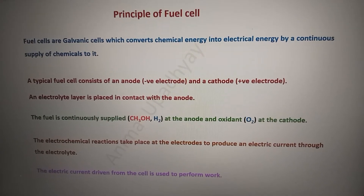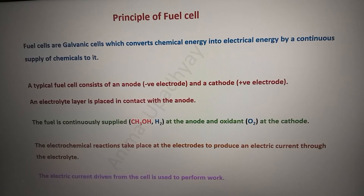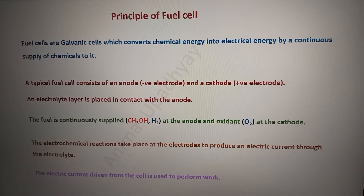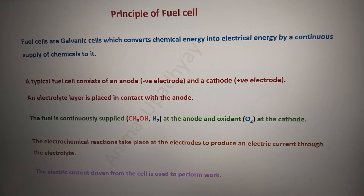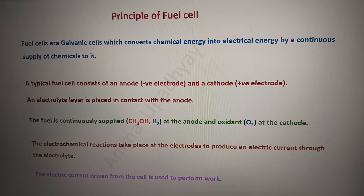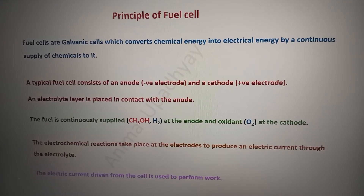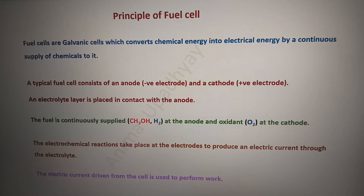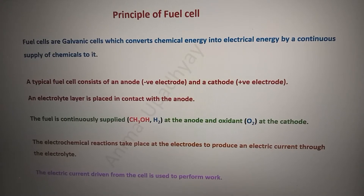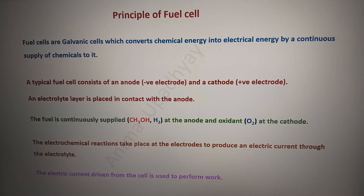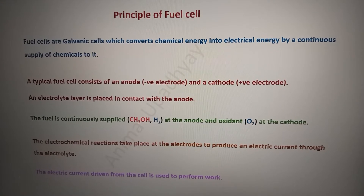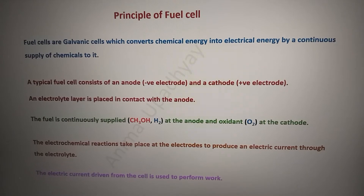When learning about fuel cells, we must know the principle behind them. Fuel cells are galvanic cells which convert chemical energy into electrical energy, and the supply of chemicals is maintained continuously at the electrodes. A typical fuel cell consists of an anode and a cathode, with an electrolyte layer placed between the electrodes. The fuel — such as methanol or hydrogen — is supplied at the anode, and the oxidant, that is air, is supplied at the cathode. The electrochemical reactions at the electrodes produce electric current, which is drawn from the cell to perform work.